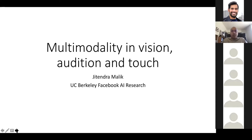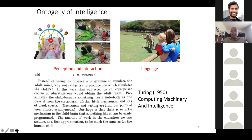Good afternoon, good morning, or good evening depending on your time zone. I'll be talking about multi-modality — vision, audition, and touch. A very plausible way to build intelligence in machines is to look at the development of intelligence in children. I call this the Turing's Baby Project, because Turing in his 1950 paper had the idea: instead of trying to simulate the adult mind, why not simulate the child — then subject it to education to obtain the adult brain.